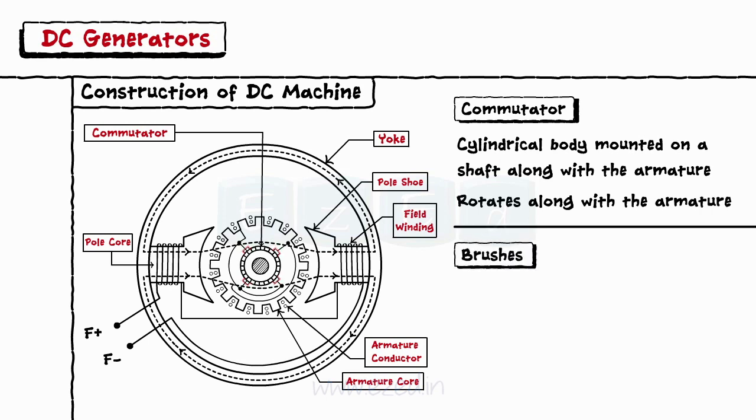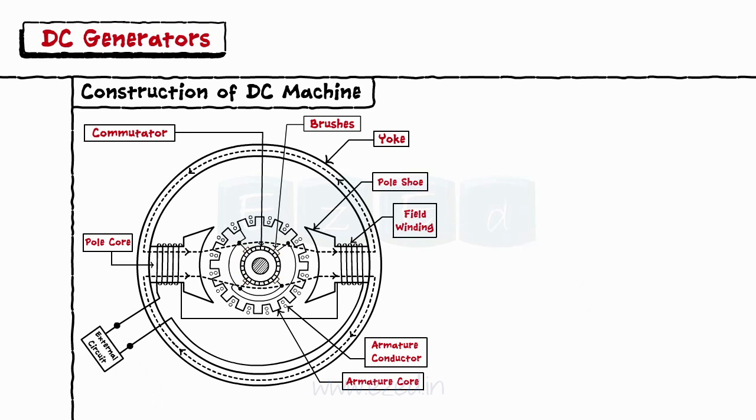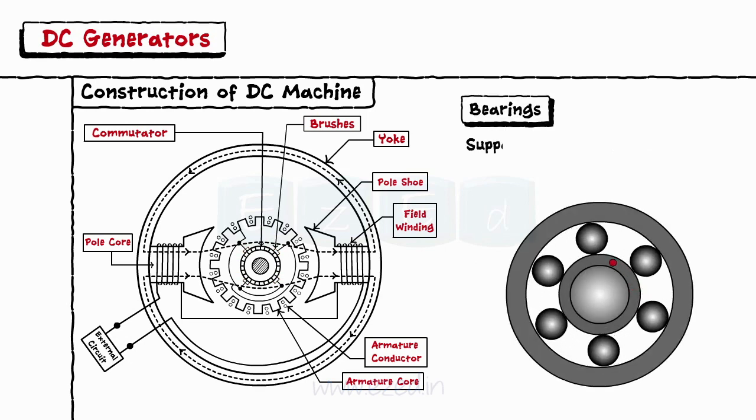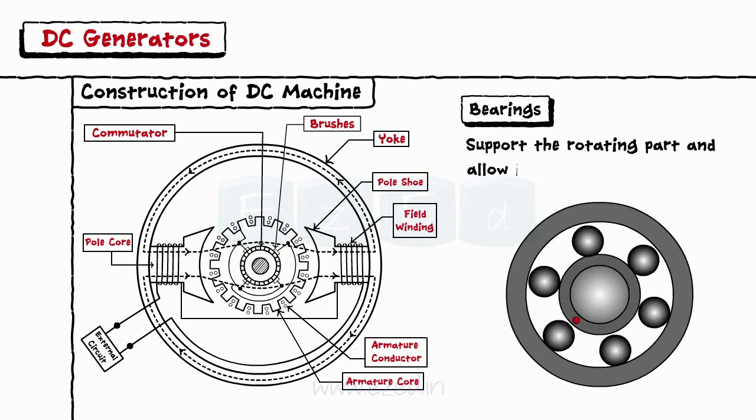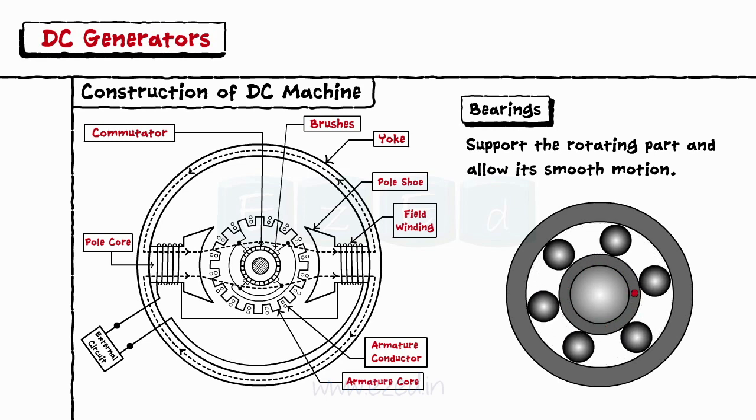The brushes are made up of carbon and mounted on the commutator. They are stationary and do not rotate. The external load circuitry is connected across these brushes. The main function of the bearings is to support the rotating part and allow its smooth motion with minimum friction.